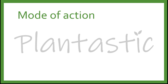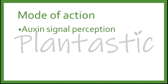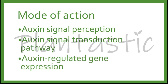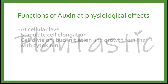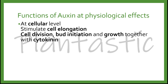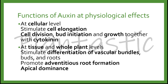The modes of action of osin are osin signal perception, osin signal transduction pathway, and osin-regulated gene expression. We are not going to discuss the fundamental mode of action in this video; you may refer to the reference at the end of this video. At the cellular level, osin can stimulate cell elongation, cell division, bud initiation, and growth together with cytokinin. At tissue and whole plant levels, it stimulates differentiation of vascular bundles consisting of phloem and xylem, formation of buds and roots, promotes adventitious root formation, and is involved in apical dominance.